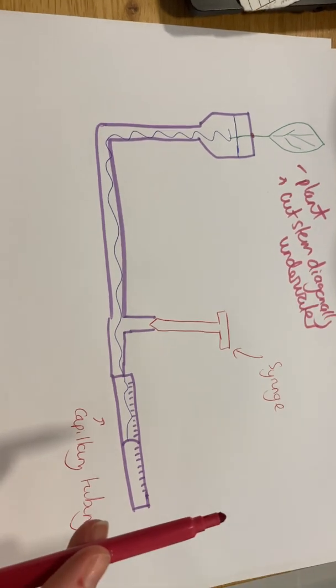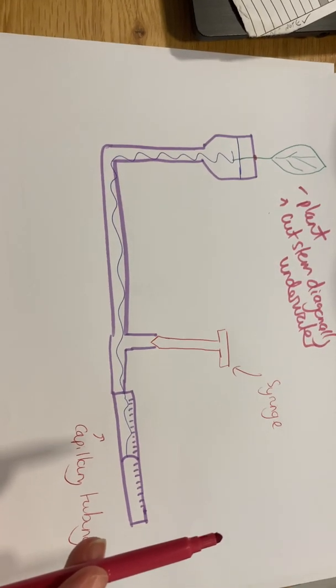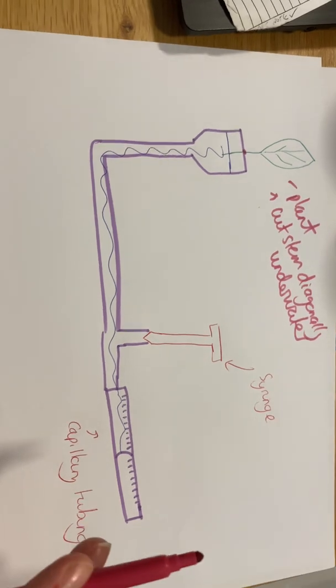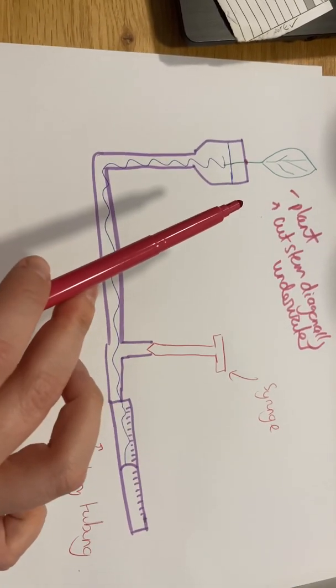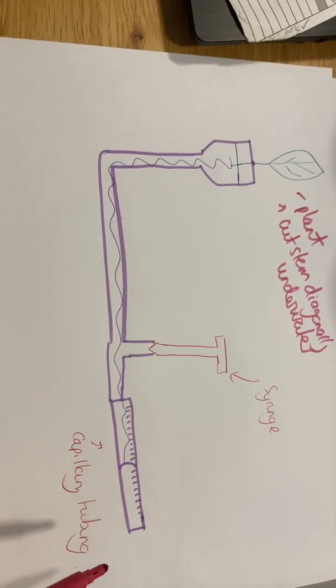In terms of your method, it is perfectly acceptable to write: set up the photometer underwater, cut the plant underwater with the stem cut diagonally to prevent any air bubbles. That would be more than enough detail for that particular part.